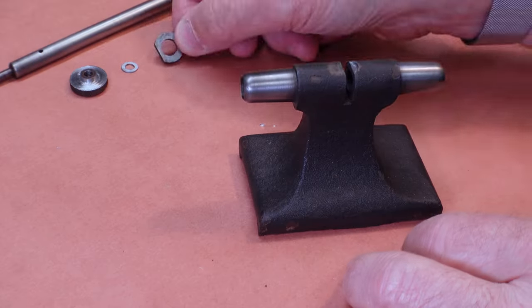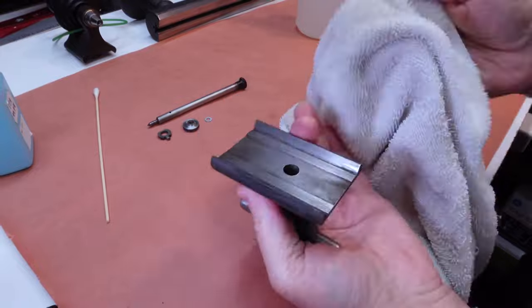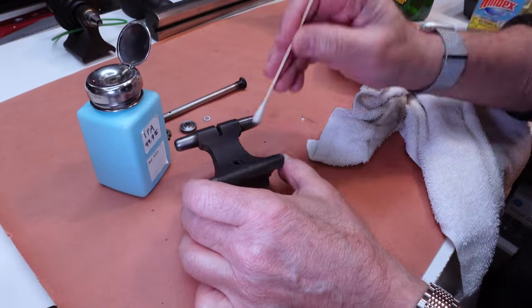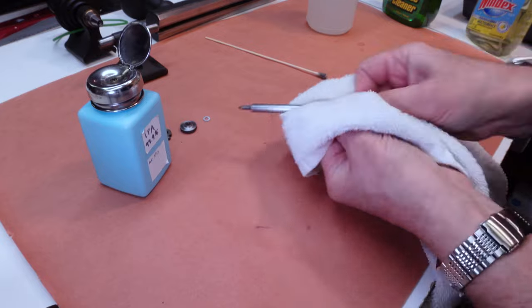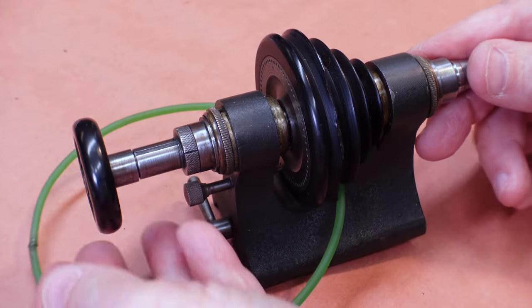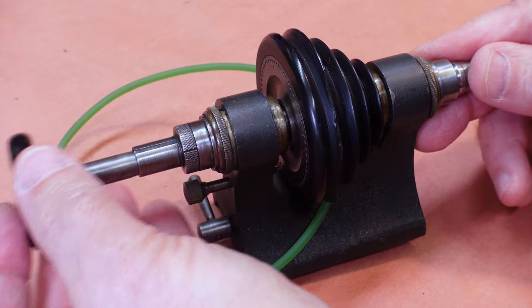The tailstock comes apart easily. The tailstock is also machined to an impressive level of quality, and I'm going to completely take it apart, clean it, lubricate it, and reassemble it.